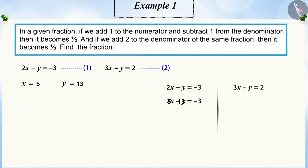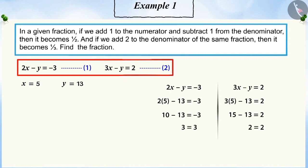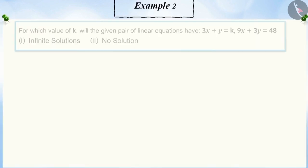Substituting these values of x and y in equation 1 and solving it, it can be verified that x is equal to 5 and y is equal to 13 is the unique solution of the given pair of linear equations.